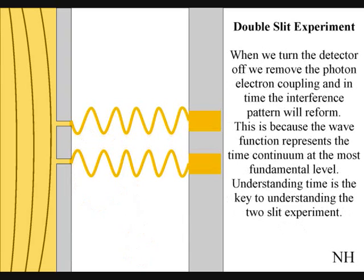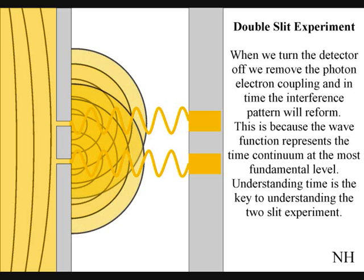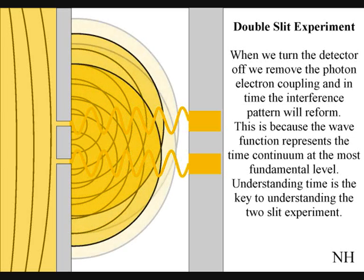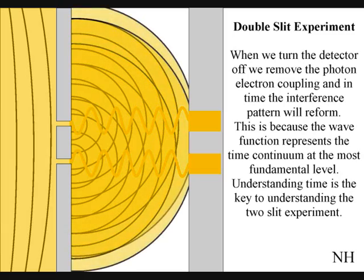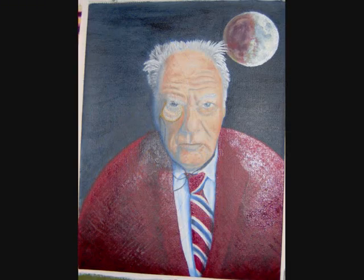If we turn the detector off, we remove the photon-electron coupling, and in time, the interference pattern will reform. Just like in Newton's first law of motion, the interference pattern will continue to maintain its state unless acted upon by an external force.